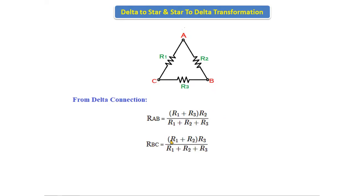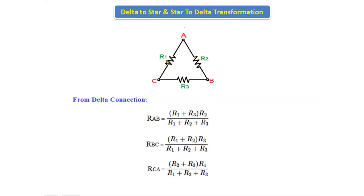Next, with respect to RBC: R1 and R2 are connected in series, and that combination is connected in parallel with R3. So we can write RBC = (R1 + R2)·R3 divided by (R1 + R2 + R3). With respect to RCA, R2 and R3 are connected in series and are connected in parallel with R1, so RCA = (R2 + R3)·R1 divided by (R1 + R2 + R3).